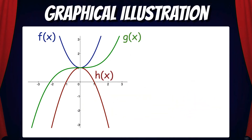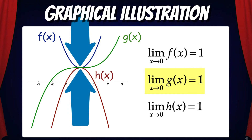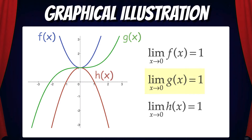Here's a graphical illustration of how this works. Since the limit of f(x) as x approaches 0 equals 1, and the limit of h(x) as x approaches 0 also equals 1, and g(x) is always in between f(x) and h(x), then the limit of g(x) as x approaches 0 is also equal to 1 by the squeeze theorem. Since g(x) is sandwiched in between f(x) and h(x), its limit will also be 1 as x approaches 0.